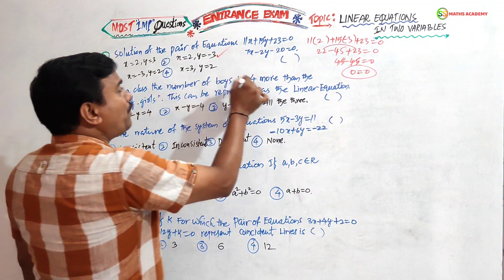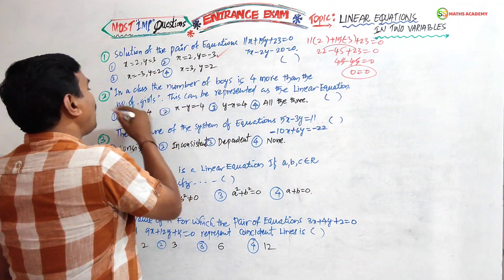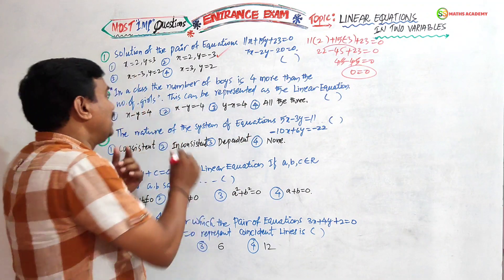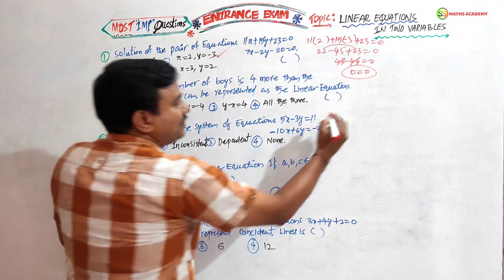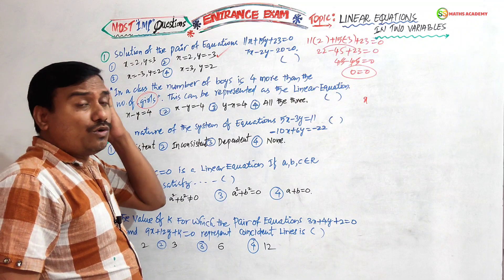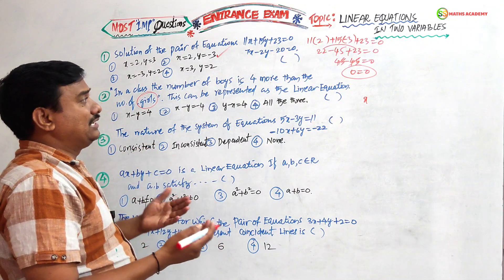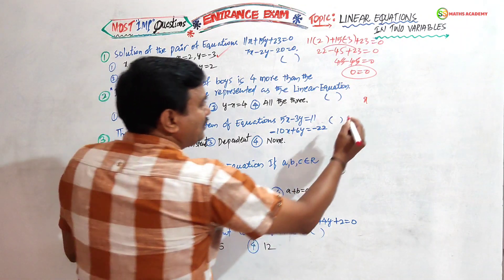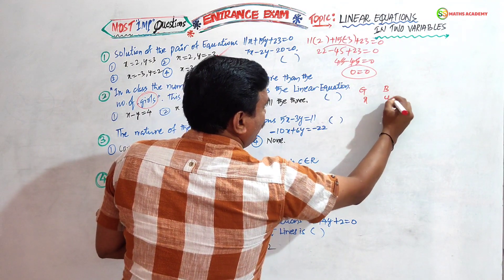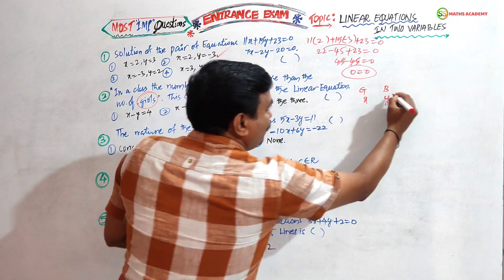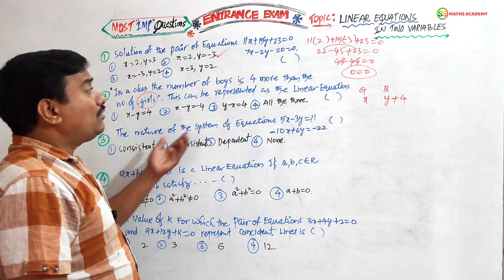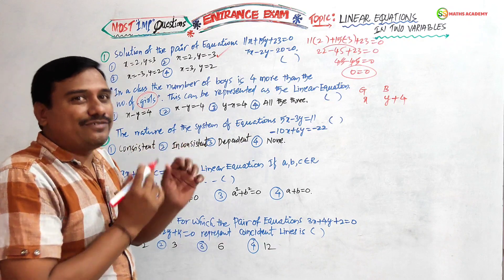Next question: In a class the number of boys is four more than the number of girls. Let girls = x and boys = y. Boys is four more than girls means y = x + 4. Now we write this as a linear equation: bring terms to the left side — x − y + 4 = 0.